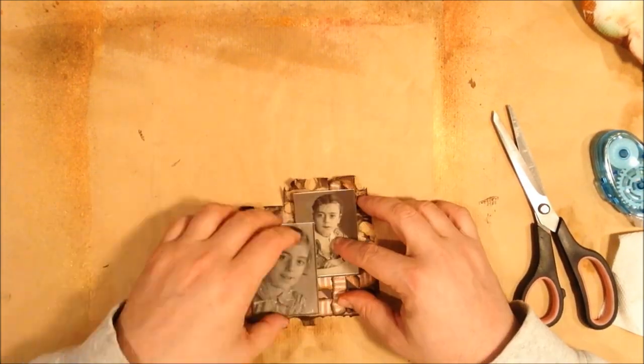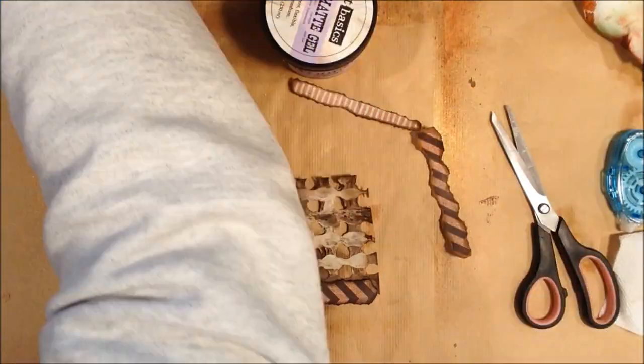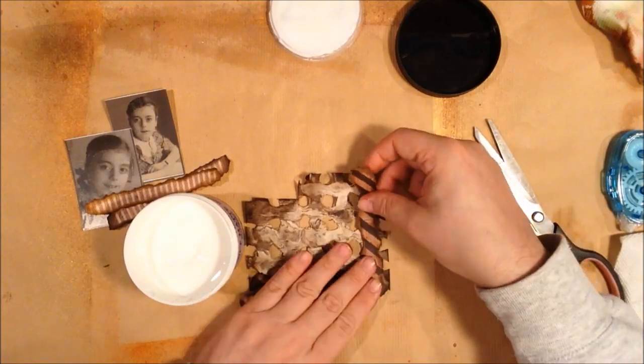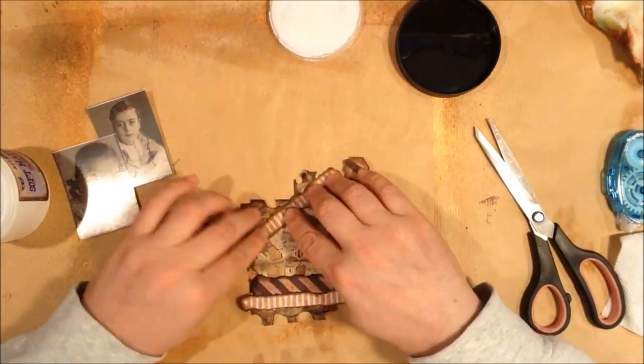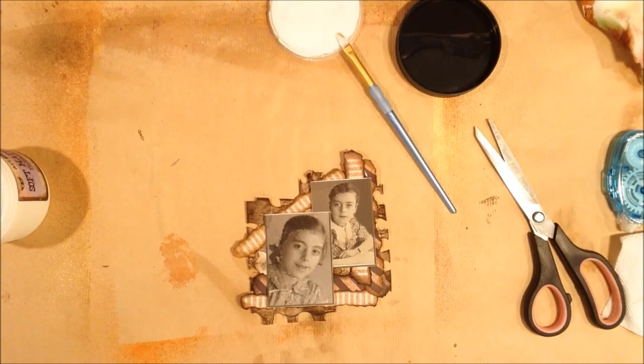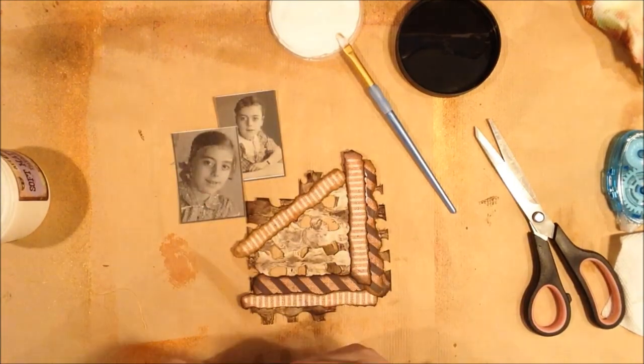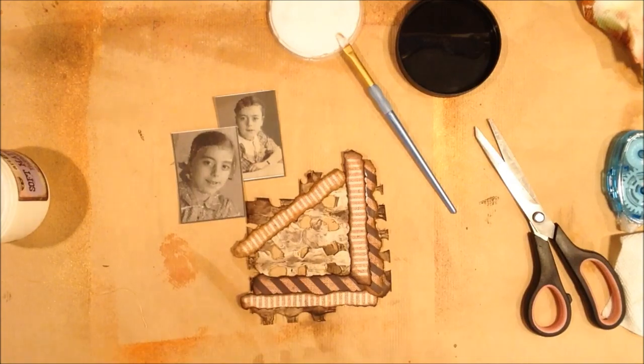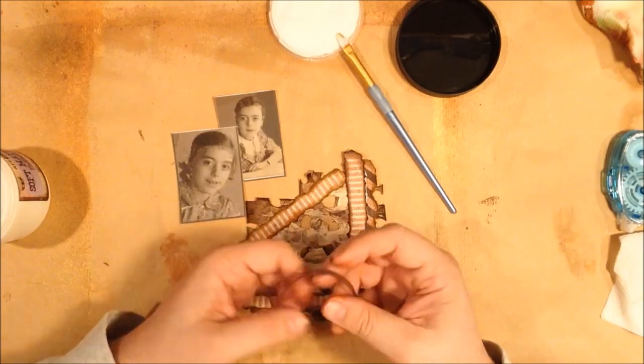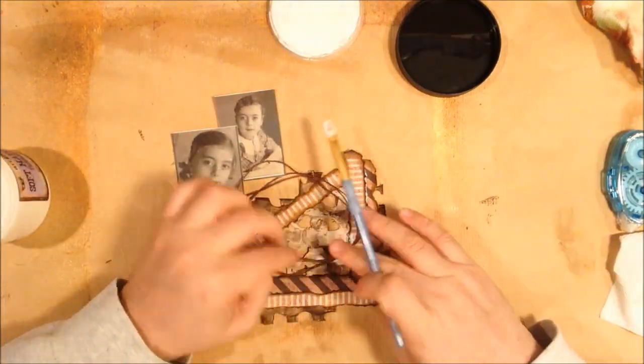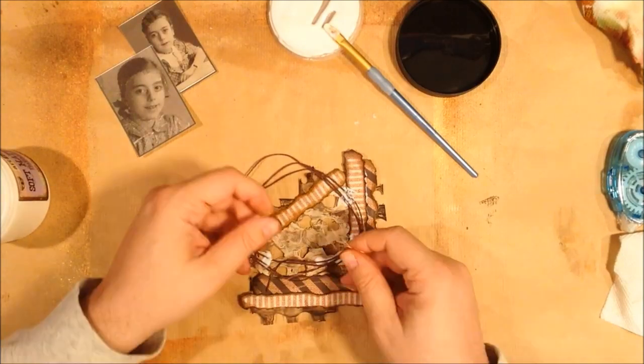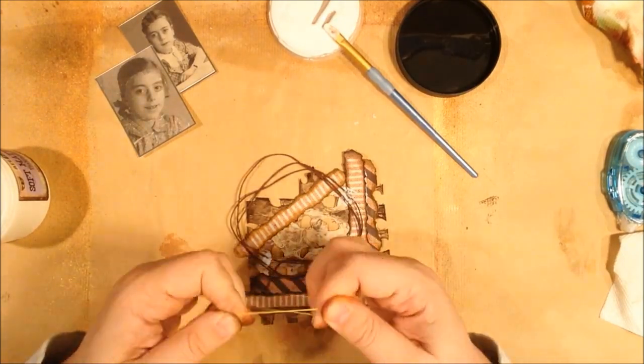Kind of just playing with the layout of them and then adhering them down with some Prima gel medium, some matte gel medium. I'm going to add some hemp twine here as well as some gold thread. Just very loosely in kind of a circle and then adhere it with the gel medium also. You can't really see the gold thread here.